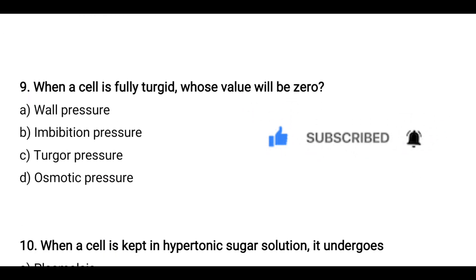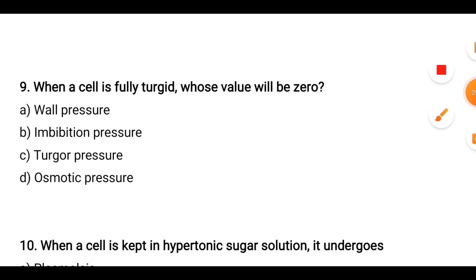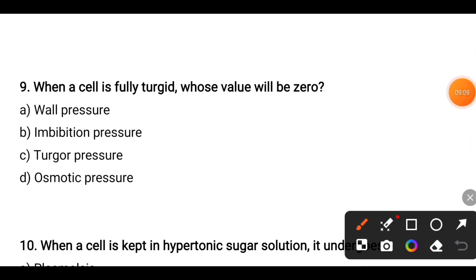Next question: When a cell is fully turgid, whose value will be zero? Options are wall pressure, imbibition pressure, turgor pressure, or osmotic pressure. The correct answer is osmotic pressure becomes zero.